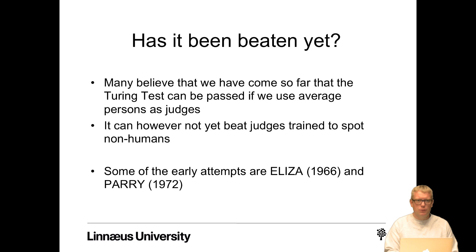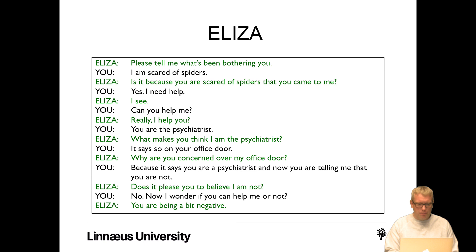Many believe we've come so far that the Turing test can be passed if we use average persons as judges. It cannot, however, yet beat judges trained to spot non-humans. Some of the early attempts are ELIZA from 1966 and PARRY from 1972. ELIZA is available online, so you can play around with it — it can be quite funny sometimes.